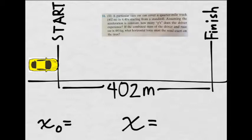Assuming that the acceleration is constant, how many g's does the driver experience? If the combined mass of the driver and race car is 485 kilograms, what horizontal force must the road exert on the tires?